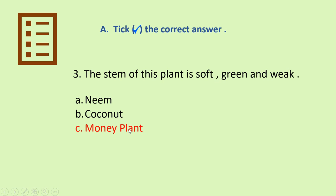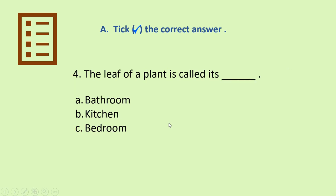This plant is very soft and it's green and it's weak also. Okay, now let's move to question number 4. The leaf of a plant is called its what? Bathroom, kitchen or bedroom?